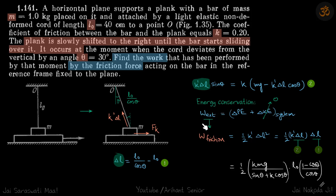Now we'll do energy conservation because we need the work done by friction, so let's consider this as external work. We can write it as ΔPE plus ΔKE of the system. Our system is the string plus this mass m.